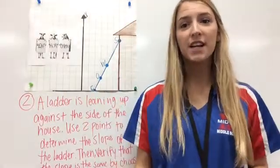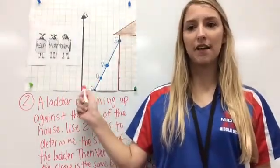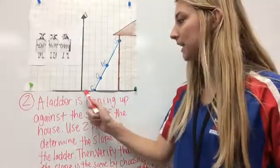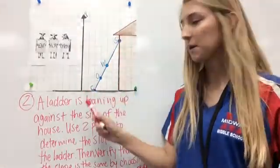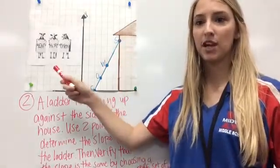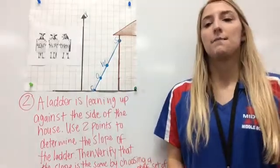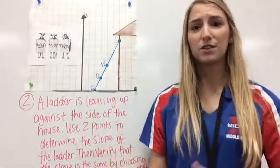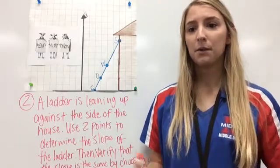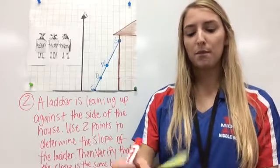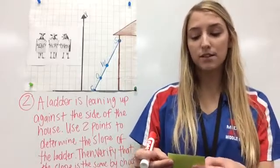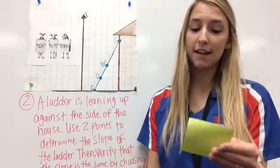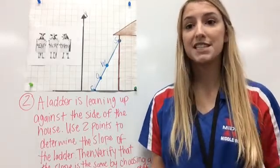This is practice problem number two. So, go ahead and copy this graph down. You don't have to draw the pretty house. Although, if you want to, it's your time. You can do it. But, I mainly want you to have this line, cows, with the point C, O, W, and S. Shout out to Chick-fil-A. So, I'm going to read this problem. You do not have to write all of that. It's just a lot. As long as you understand what we're looking for in the problem, that's fine by me. I'm going to read it just in case that's too much. So, the problem is, a ladder is leaning up against the side of a house. This is the ladder. Use two points to determine the slope of the ladder. And then, verify that the slope is the same by choosing two different set of points.